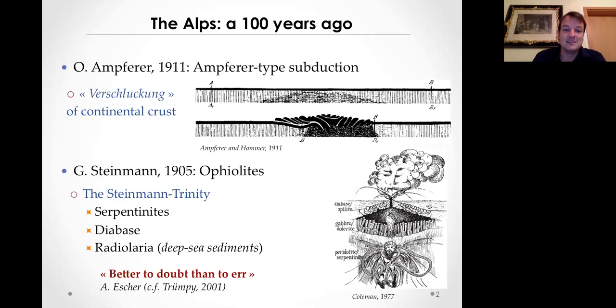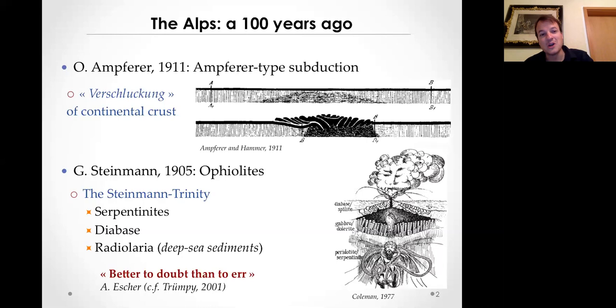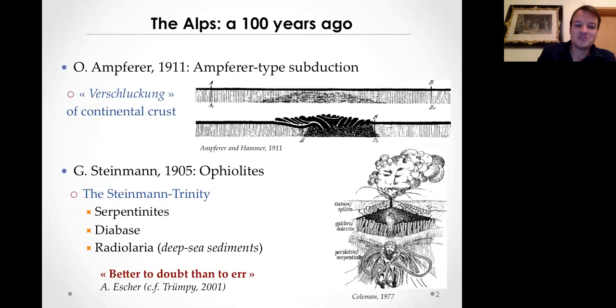Around the same time, Gustav Steinmann in 1905 defined what would be known as ophiolites - the Steinmann Trinity - which is the association of serpentinites, basalts, and deep sea sediments (radiolarites) that together form the basic structure of ocean crust. They had all the tools at their disposal to develop a plate tectonic view of the world, but that didn't happen, partly due to the cautious outlook of geologists at the time. As Arthur Hacher said, 'It is better to doubt than to err.'